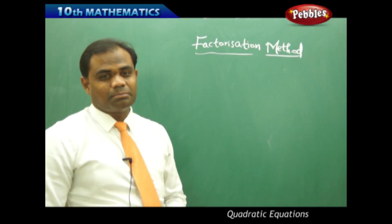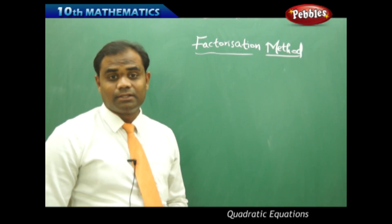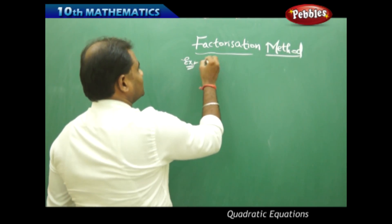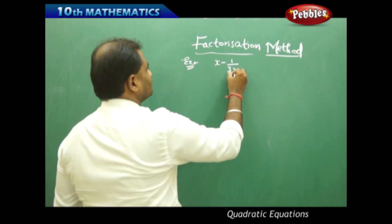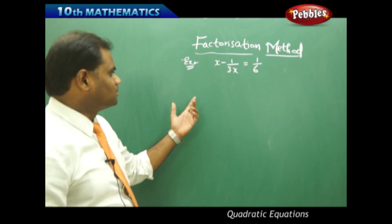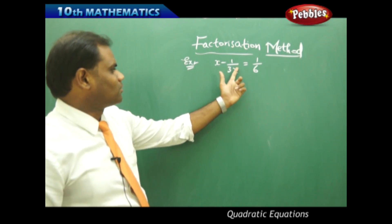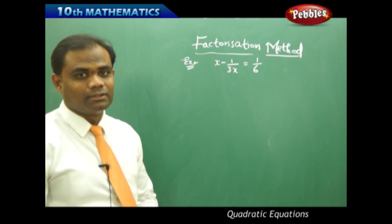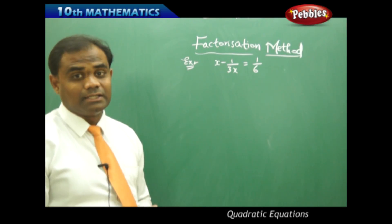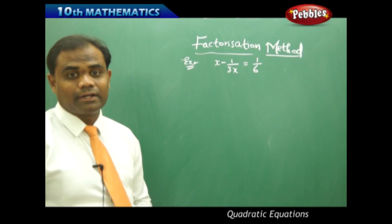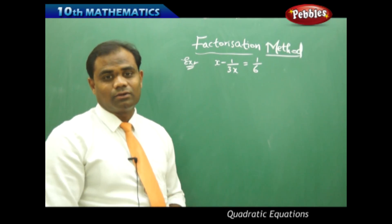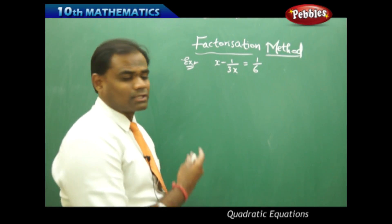Let me take an example problem and see how the factorization method works. I take the equation x minus 1 over 3x equals 1 over 6. This is not directly a quadratic because x appears with power minus 1, which is non-negative integral. We have to simplify it further to test whether it is a quadratic equation.